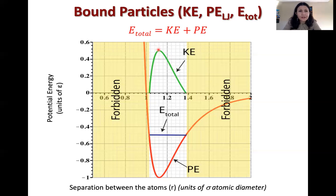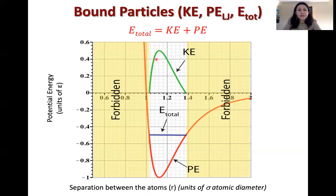Looking at the extreme value: 0.5 plus minus one gives us minus 0.5, which is consistent. Anywhere in between, when making these plots, it's always a good idea to check the extreme values where kinetic energy goes to zero and the maximum. For the rest, you make a plot that exactly mirrors the potential energy plot, because when you add them, you get the straight line representing total energy.